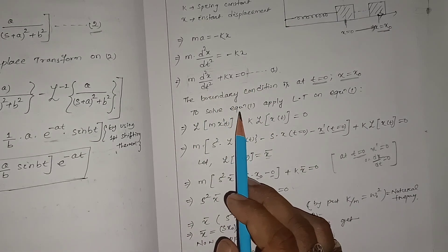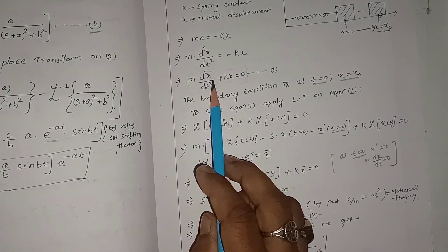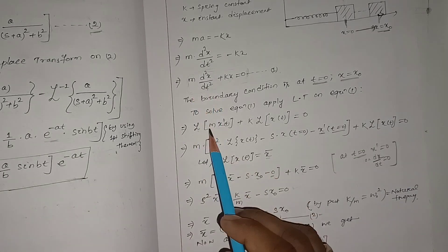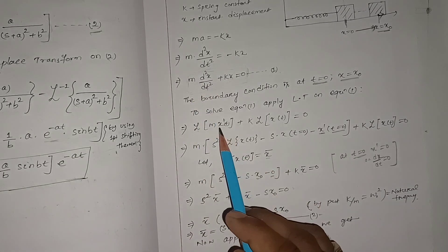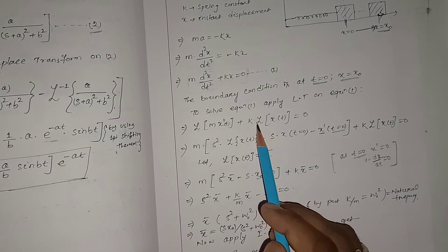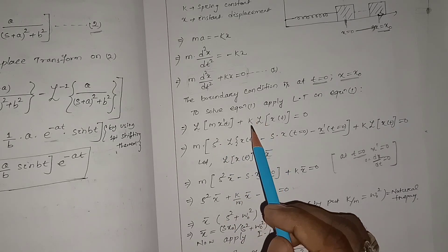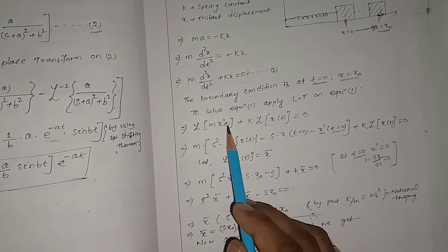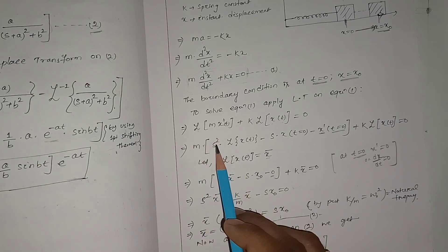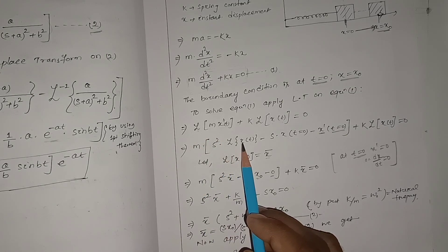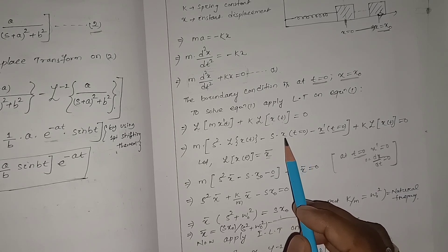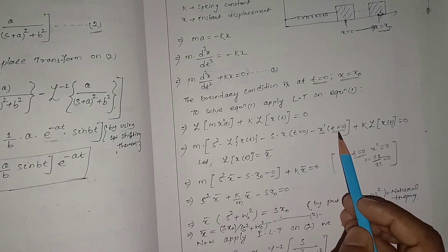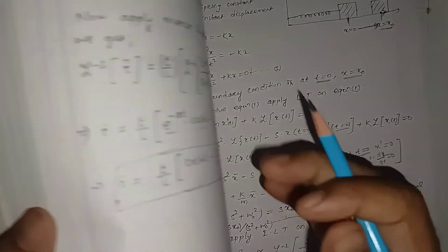To solve this differential equation we apply the Laplace transform. Taking the Laplace of the whole equation: m times L{x''(t)} + k times L{x(t)} = 0. For the second derivative term, the Laplace transform gives m times [s² X̄(s) − s·x(0) − x'(0)], where X̄(s) denotes the Laplace transform of x(t).